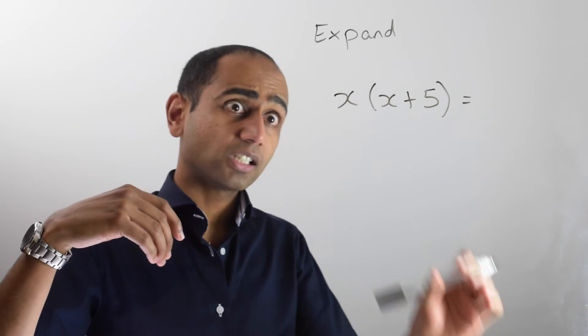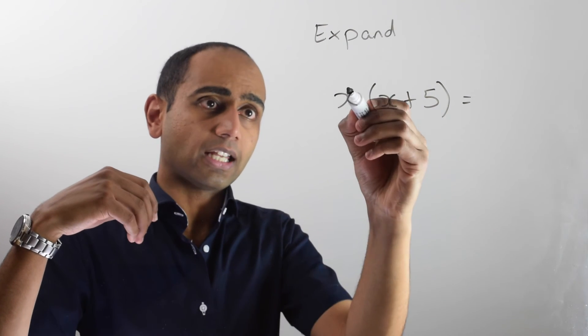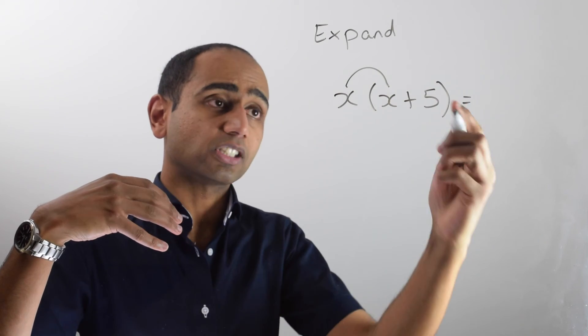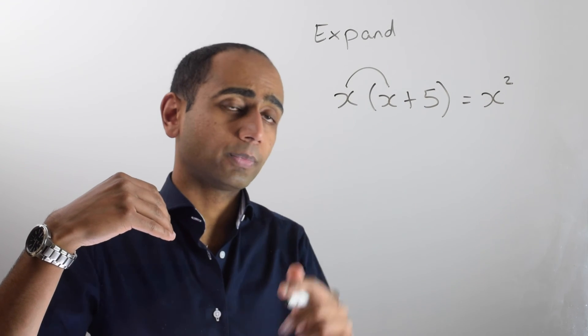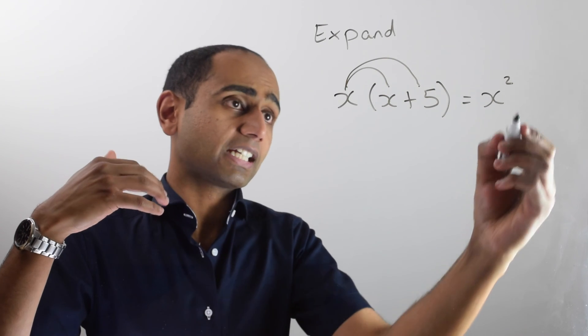In this last example I've got x lots of (x + 5). We're going to use the same method again. x times x gives me x squared. Remember x times itself is the same as x squared, or x to the power of 2. And then I need to do x times 5, which is going to be 5x.